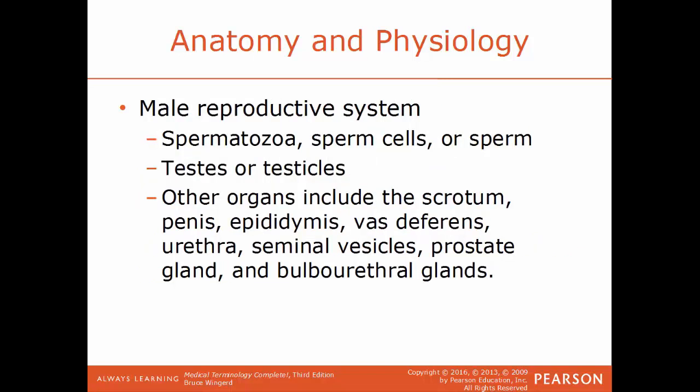Some basic structures of the male reproductive system: you have the spermatozoa, which is the formal name for the sperm cells. You have the testes, also known as the testicles. Other organs include the scrotum, the penis, the epididymis, vas deferens, urethra, seminal vesicles, prostate glands, and the bulbourethral glands.